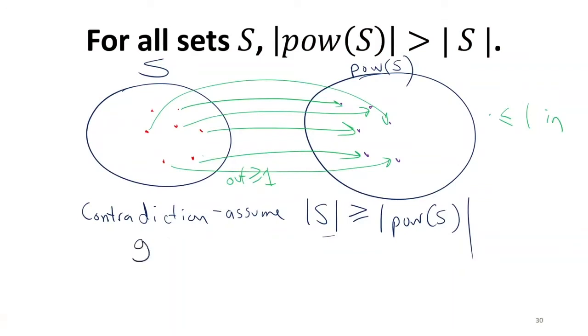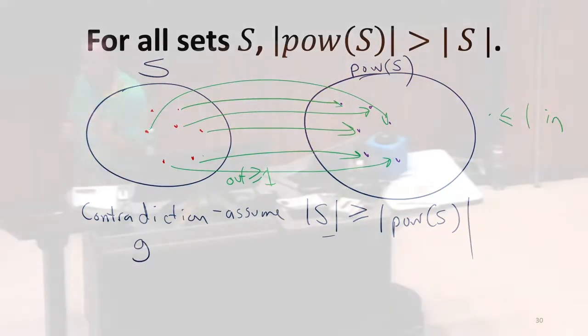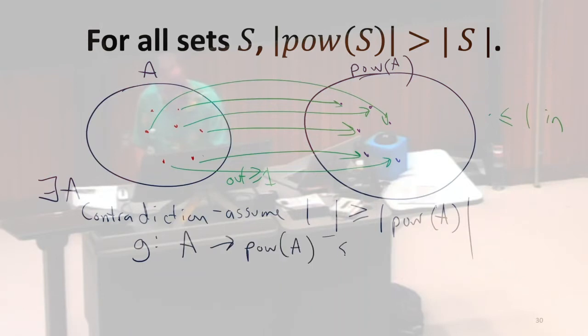So we're going to have some function G. We're proving for all sets. To show that it's not true for all sets, we just have to find one set that it's not true. Let's assume there exists some set. So that's going to be the set A. And for the set A, there's some function G from A to the power set of A that is surjective. This is just following from our definitions.